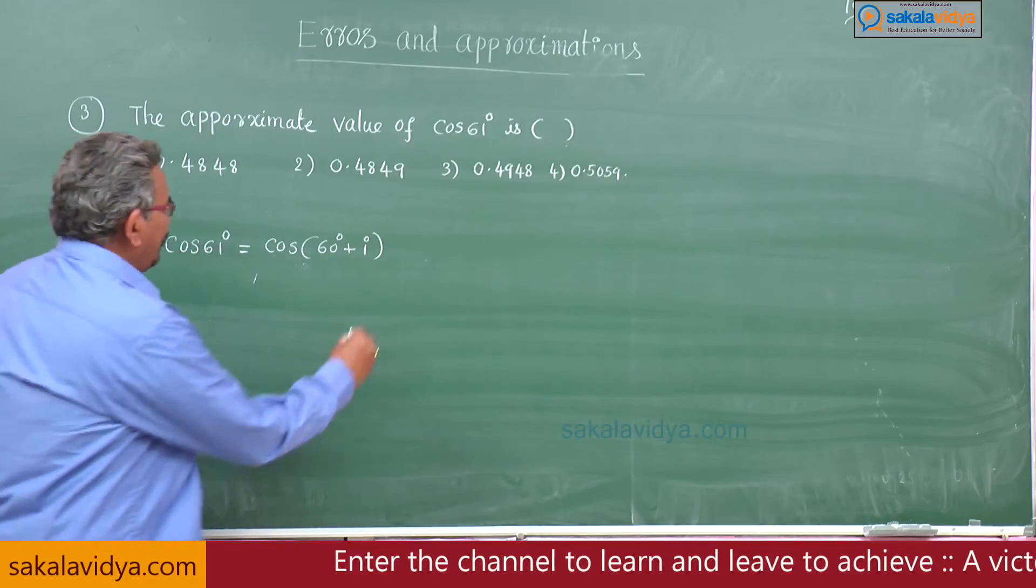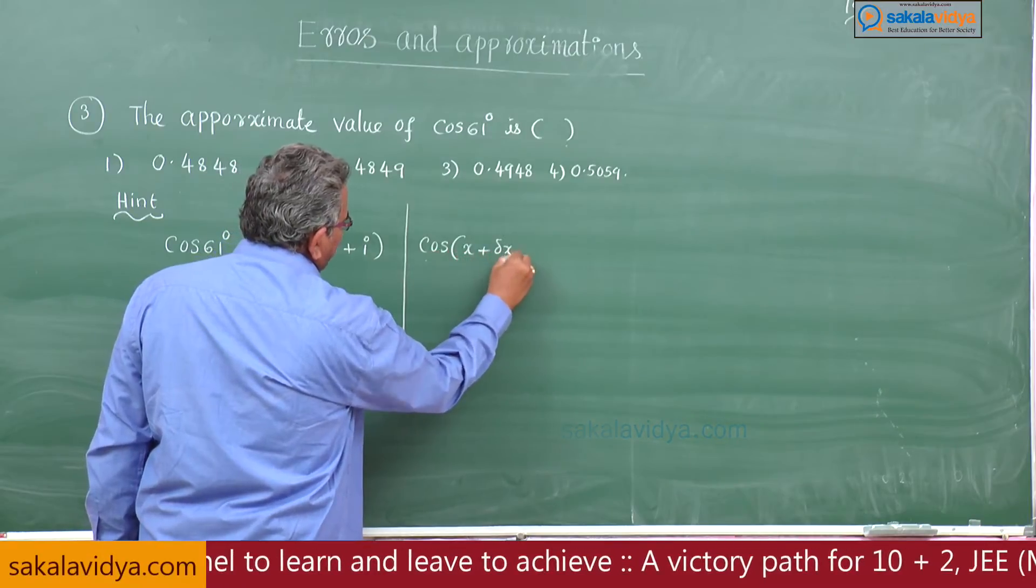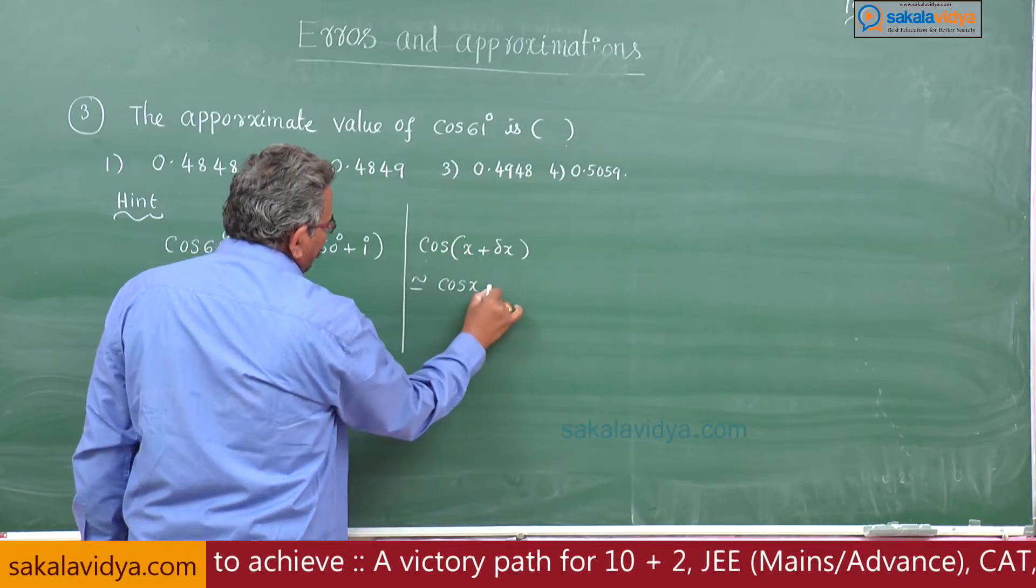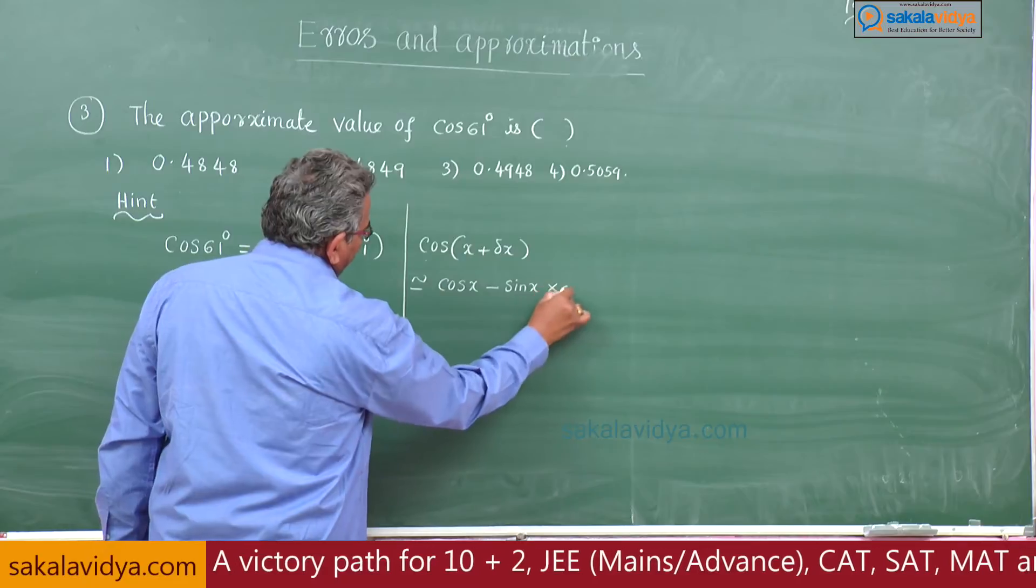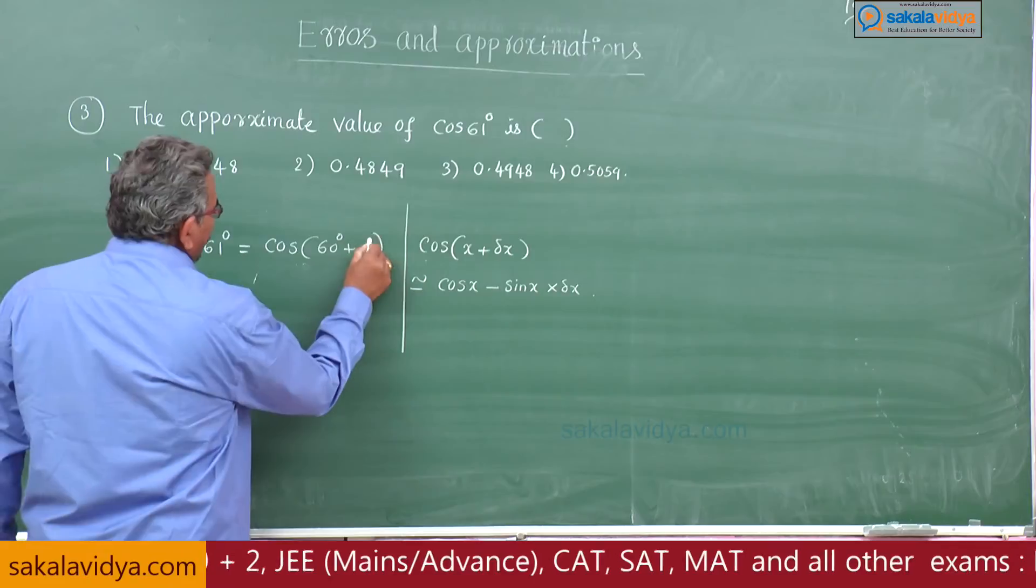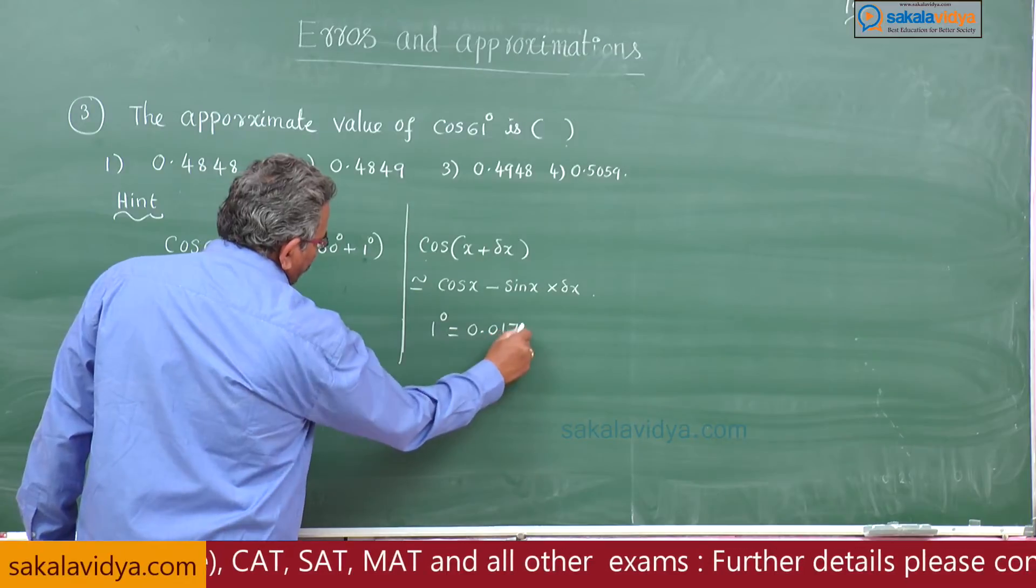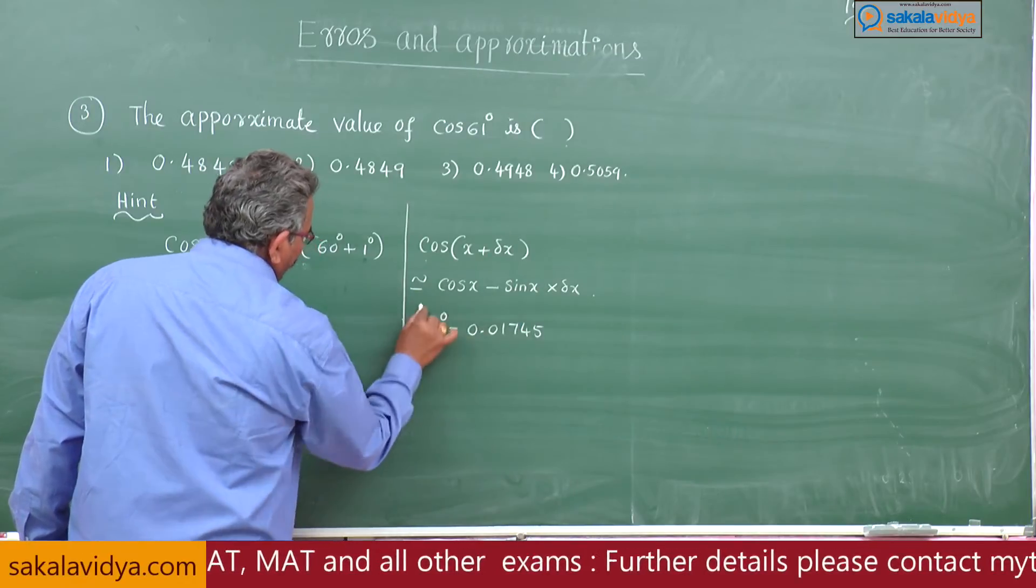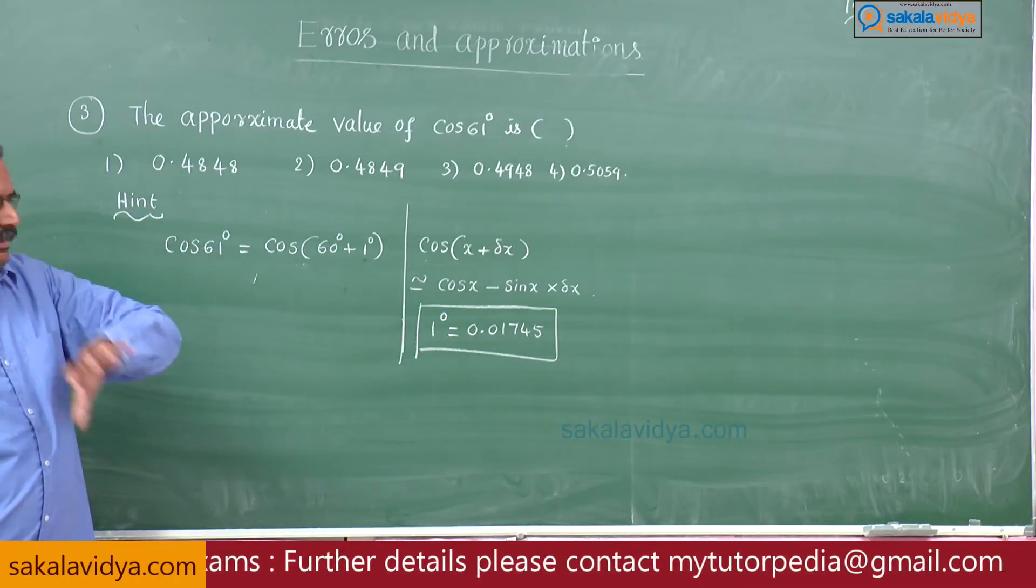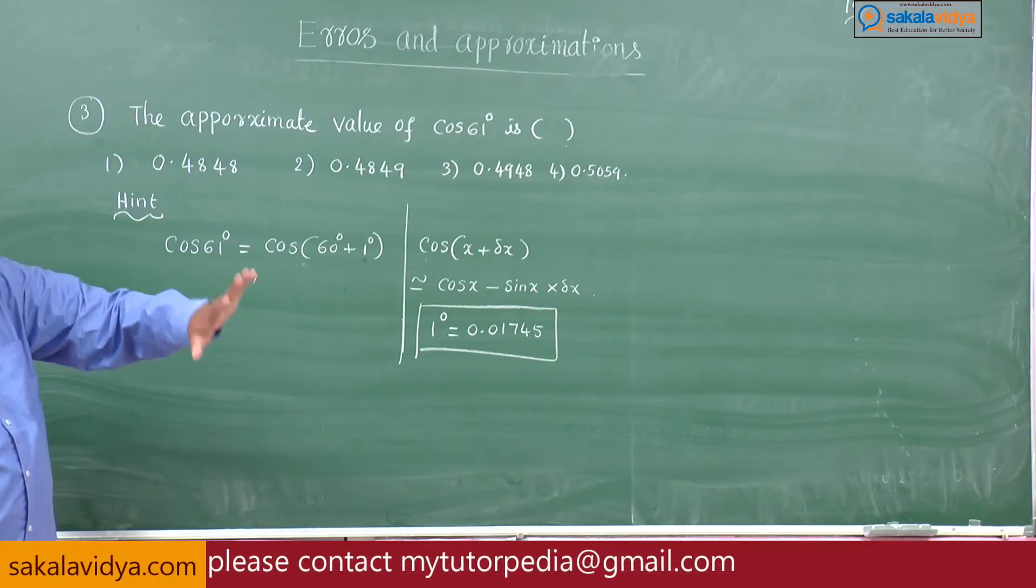This appears to be a shortcut formula: cos of x plus delta x is approximately equal to cos x minus sin x multiplied by delta x. But here delta x is 1 degree, so 1 degree equals to 0.01745 or sometime 0.018 also you can take it, but generally 1 degree equals to 0.01745 radians.